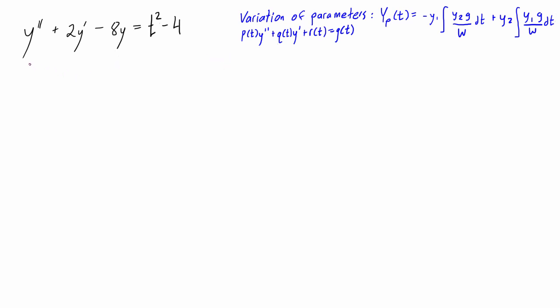To get started, we're going to write down the homogeneous differential equation that is associated with the original differential equation. That is basically the whole left hand side is the same, and we just write a zero on the right hand side.